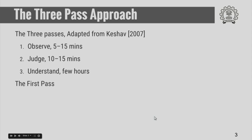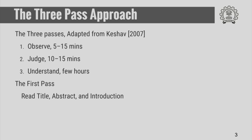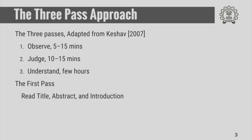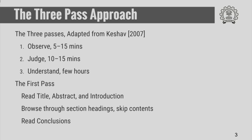The first pass is where you only observe a paper. We just read the title, the abstract and introduction. The abstract and introduction should tell you what is the problem being investigated, what is the motivation behind doing this investigation, and what is the connection with the literature. Then you browse through the section headings, skip the contents, just look at the section headings and directly jump to the conclusion section. So in the first pass, we quickly look at abstract, introduction and conclusions. We are not trying to pass any judgment about the work.